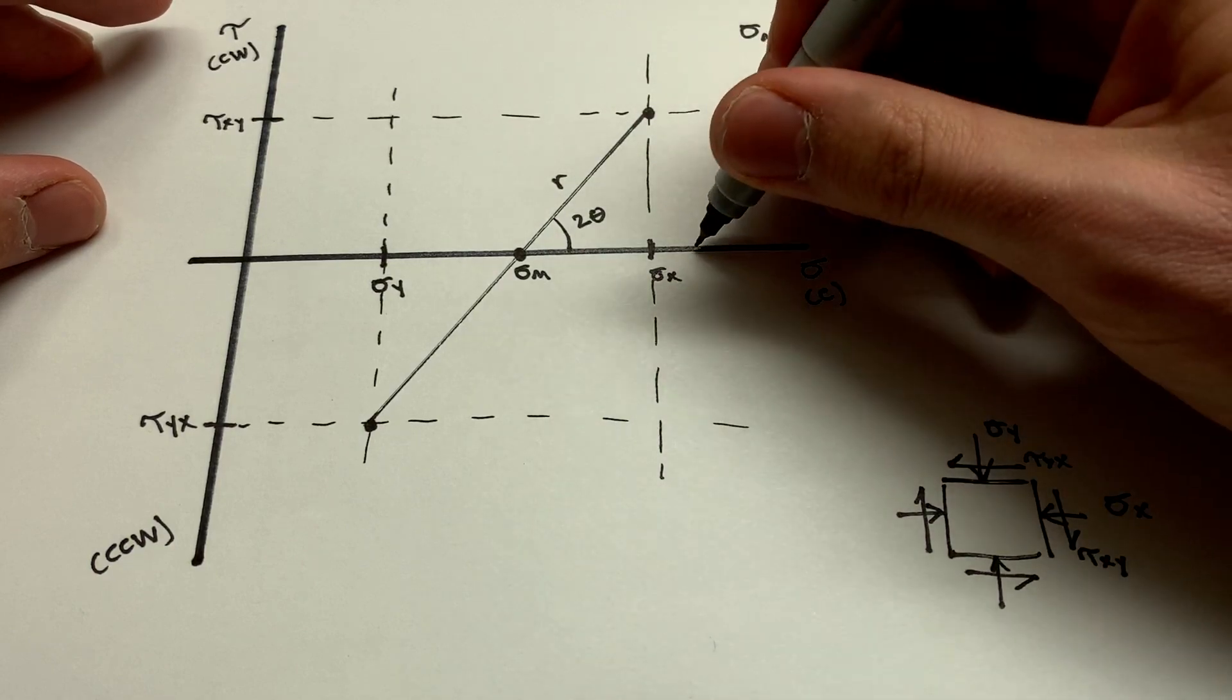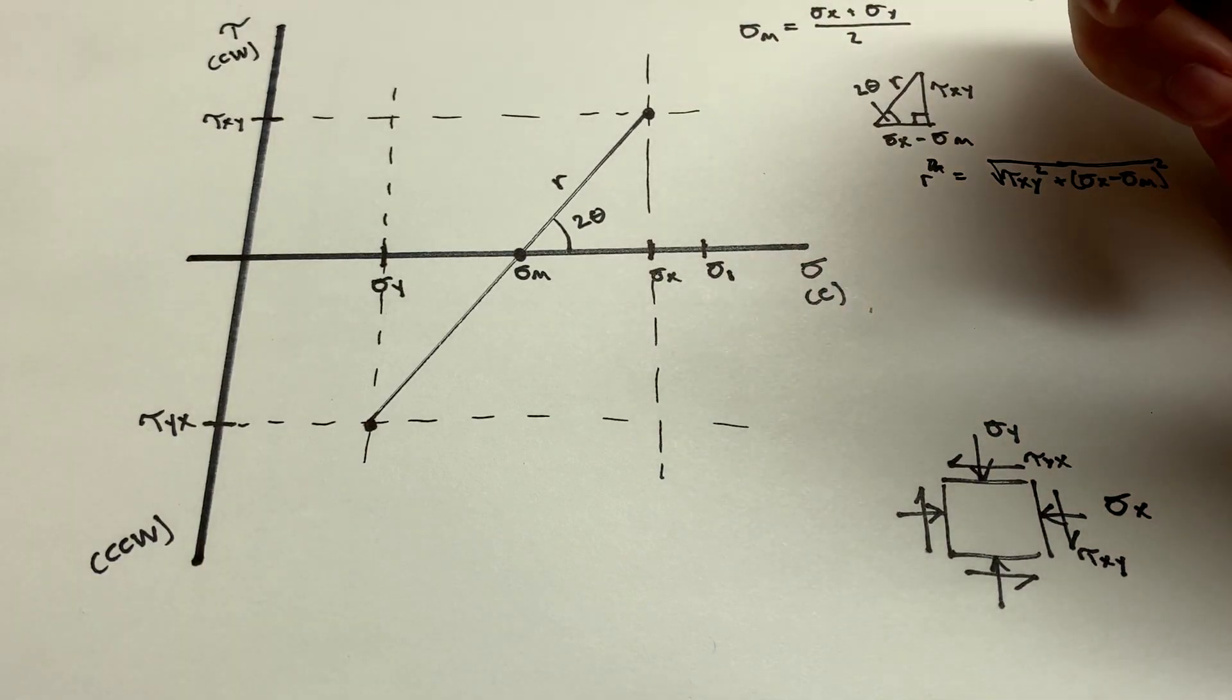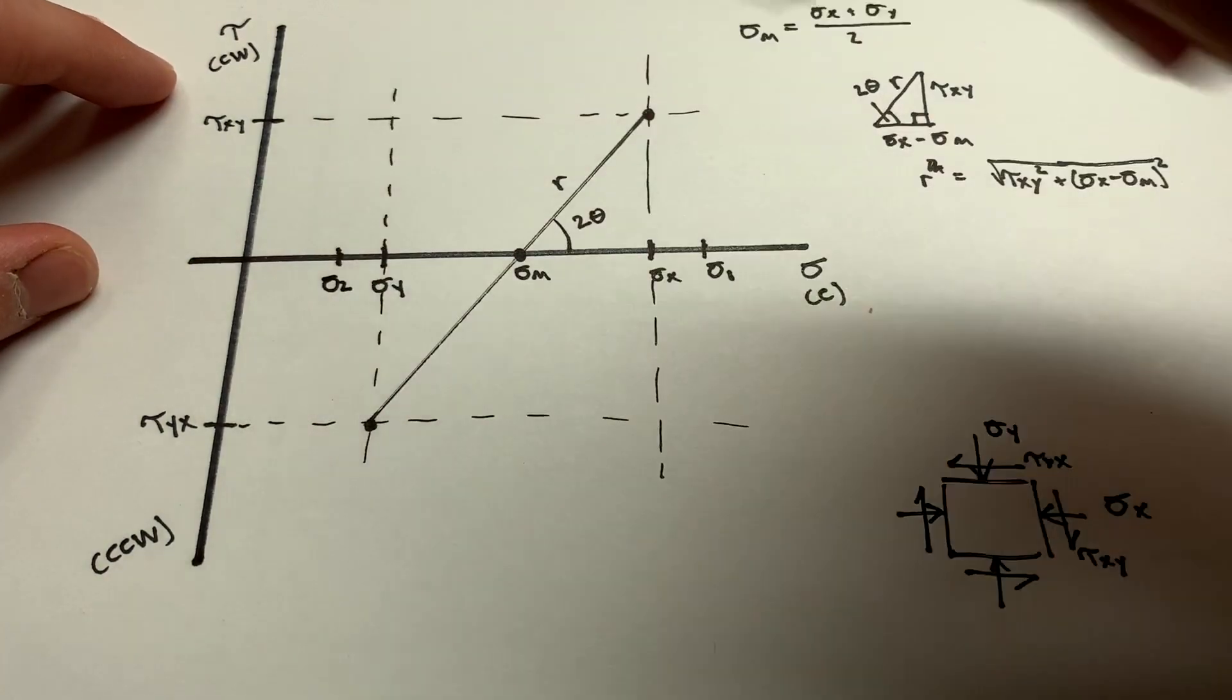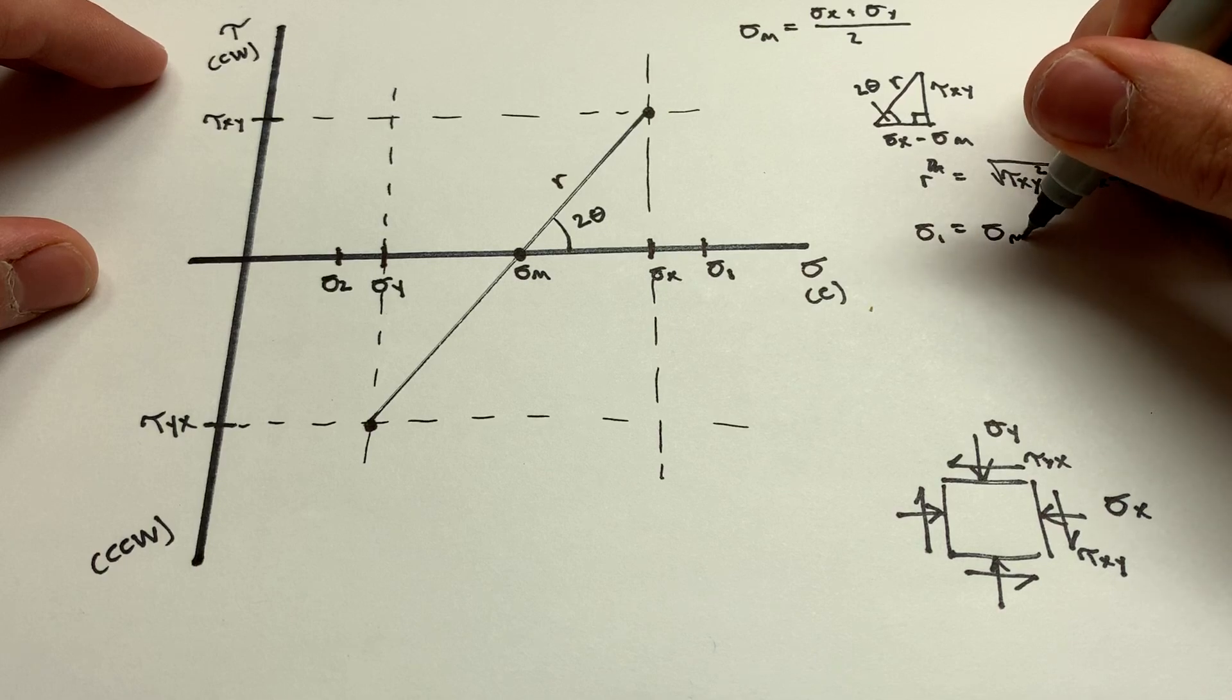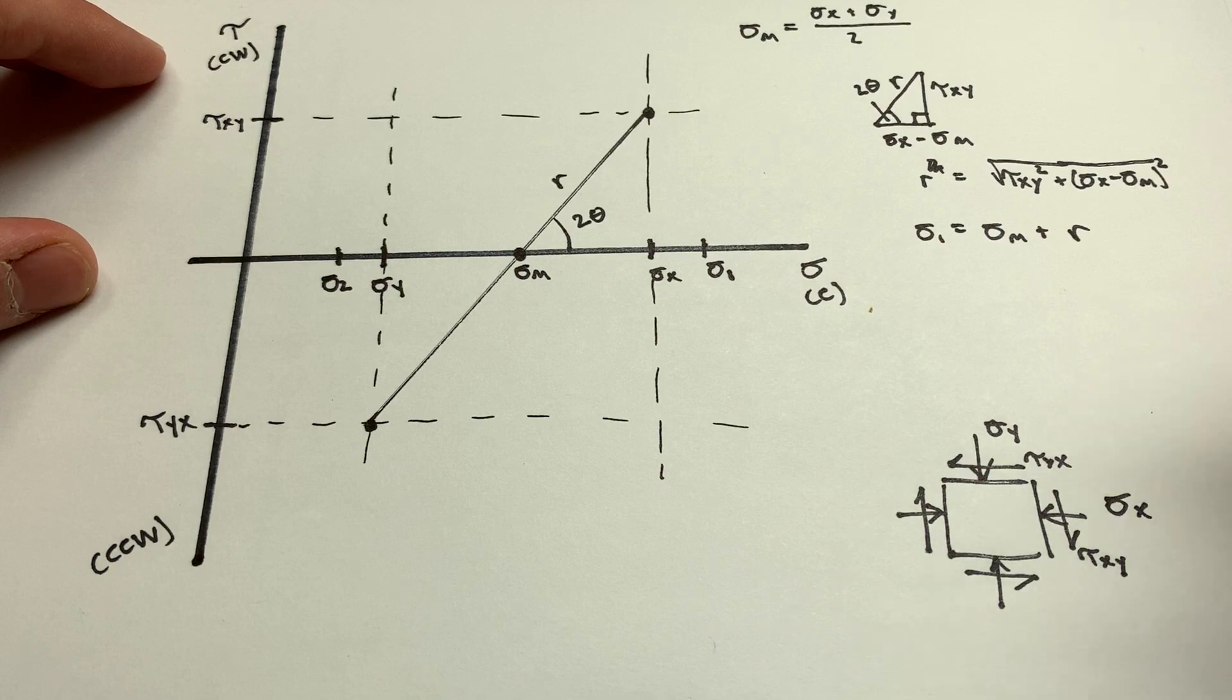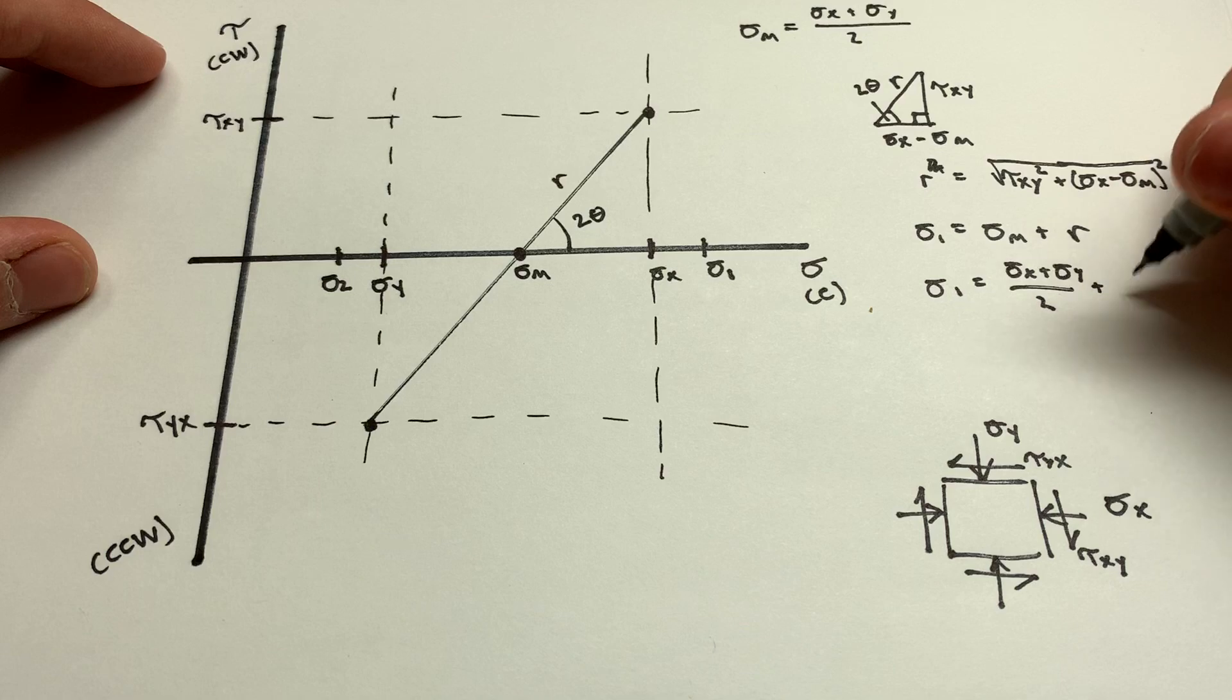So now we have a value for r, and then we can go out that same distance here. Again, I'm not going to calculate any values here, so I'll just estimate. We'll say that that becomes sigma 1, we'll usually say, is our maximum principal stress. And then sigma 2 will be our minimum. And then using that, we can say that sigma 1 is equal to sigma m plus r. And then if you plug all of that in, of course, you'll get that sigma 1 is equal to...